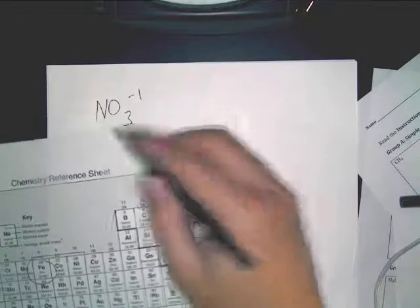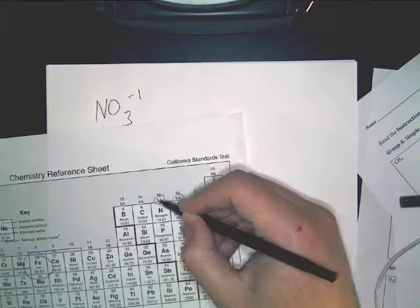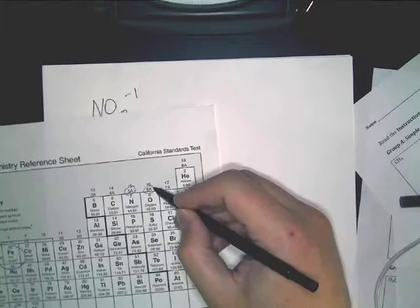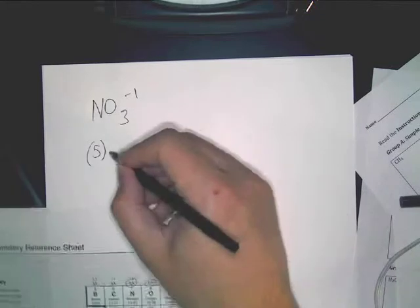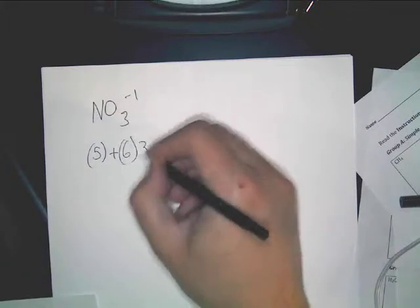So, you have NO3^-1, you've got to look and see, nitrogen has 5 valence electrons, so it's got 5. Oxygen has 6 valence electrons. Now, how many oxygens do you have here? So, you're going to do 6 times 3.